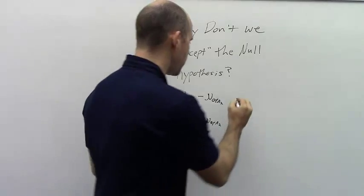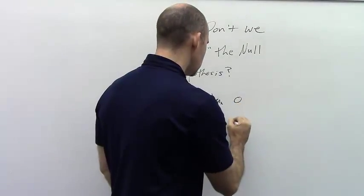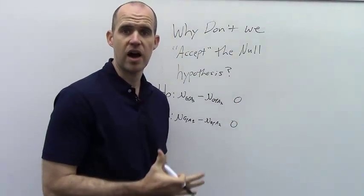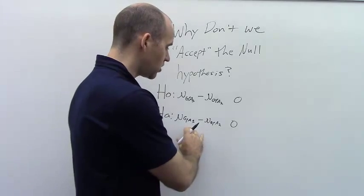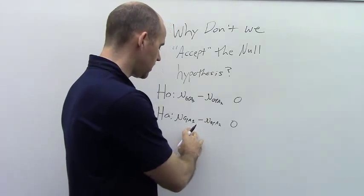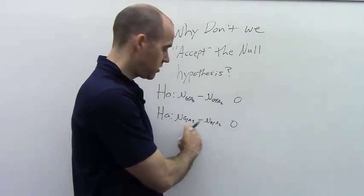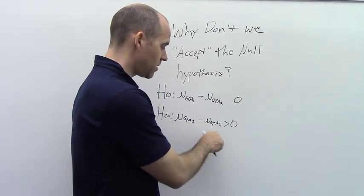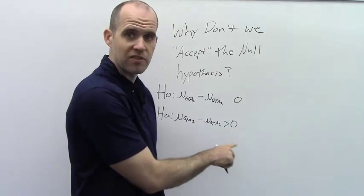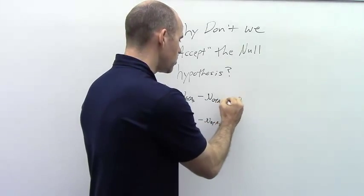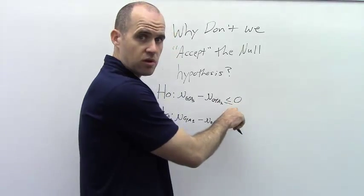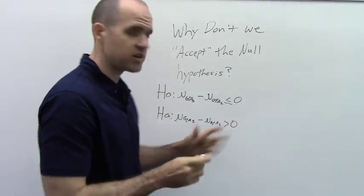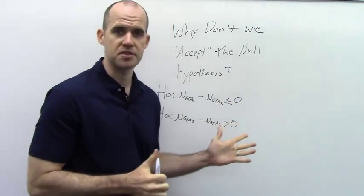Recall that if I'm trying to demonstrate that we have a higher GPA, then that's going to be my alternative. So if ours is higher, then when we subtract our competitor, it would be a value greater than zero, which means that the null would be equal or less than zero. So, very simple hypothesis test.